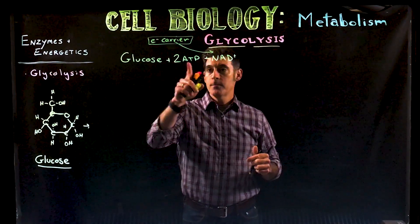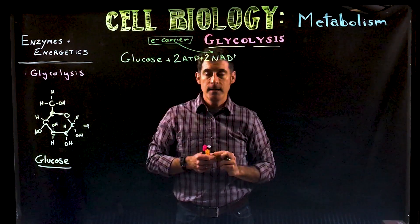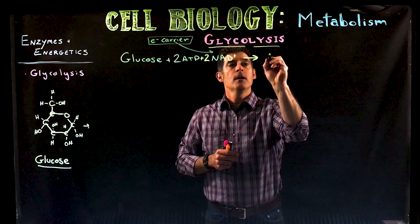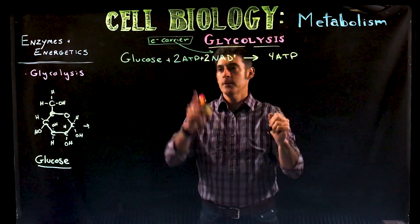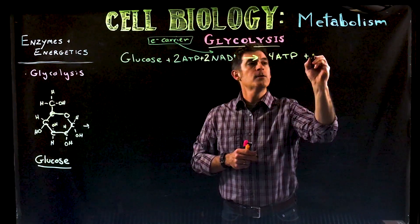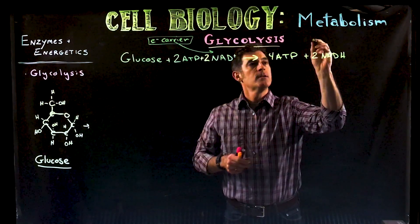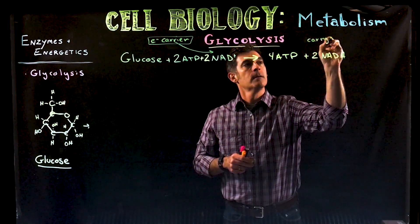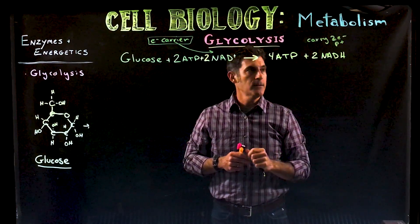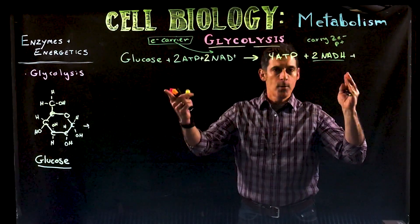In the equation: glucose plus two ATP and two NAD+ molecules produce four ATP, so we cost two but make four — a net gain of two. We also produce two NADH molecules. NAD+ picks up two electrons and a proton to become NADH. These are the electrons we're going to be following through the process.